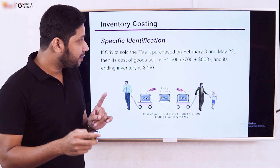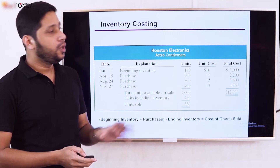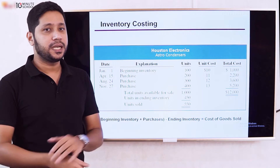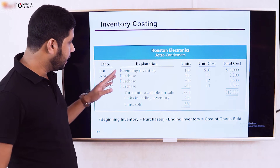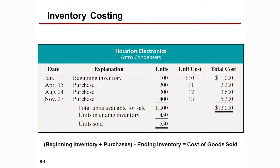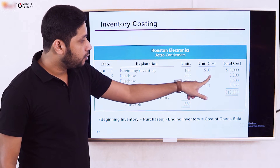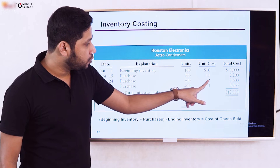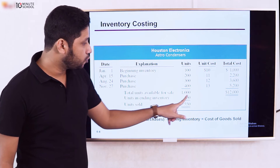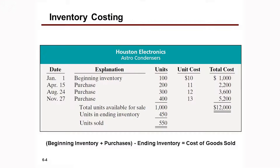Now let's move to FIFO and LIFO with a worked example. We have a total of 1,000 units of product: 200 units purchased, then 300 units, then 300 units, then 300 units — totaling 1,000 units. We will assume an inflation trend, meaning each purchase batch has a higher price.